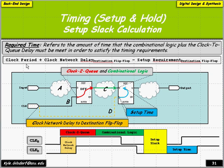Here's an example where we have our clock period plus our clock network delay, and we subtract our setup requirement from that. We have our clock insertion point, some clock network delay for the clock to arrive at the destination flip-flop, and we must have our combinational logic stable some setup time before the next clock edge. The source flip-flop has a clock-to-Q delay and then combinational logic delay. The time left over before it must be stable to meet the setup requirement is called setup slack.